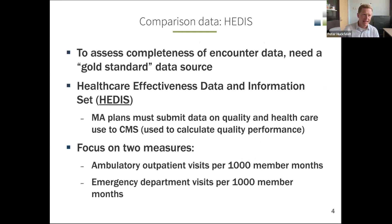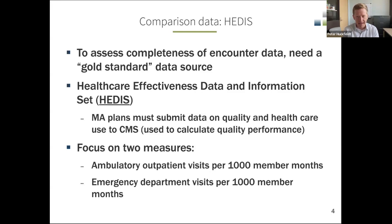A key part of assessing the completeness of encounter data is that we need a gold standard data source—one that we believe to be accurate and complete. For this analysis, we used the Healthcare Effectiveness Data and Information Set data, which I'll refer to as HEDIS data. Medicare Advantage plans are required to submit data on quality and healthcare use to CMS to calculate plan performance. We focused on two measures: ambulatory outpatient visits per 1,000 member months, and emergency department visits per 1,000 member months.